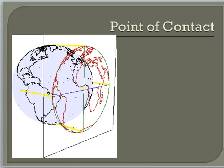For an azimuthal projection, imagine taking a piece of paper and laying it against the surface of a globe. The point where the paper actually touches the surface is the tangent point, and that point would have the least distortion. Think about inking the surface of the globe — where you touch it, you get a good representation. But as you move away from that point of contact, there needs to be stretching and distortion to reproduce that portion of the surface on the flat piece of paper.